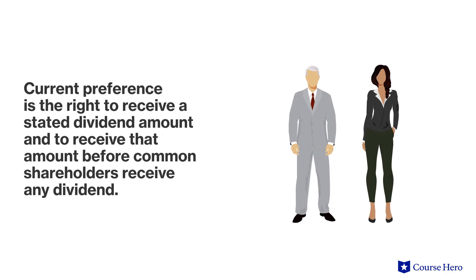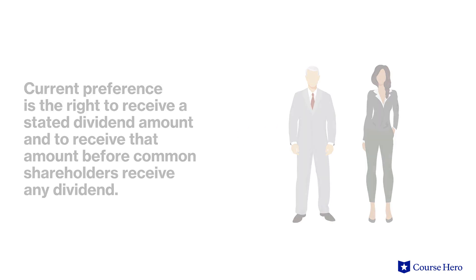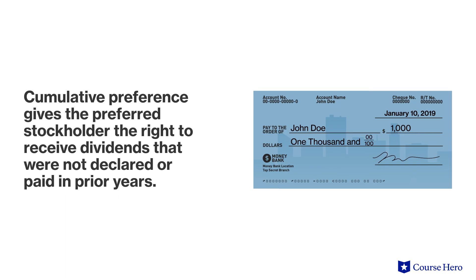The right to dividends accorded to preferred stock can take three forms. First, the current preference: the right to receive a stated dividend amount and to receive that amount before common shareholders receive any dividend. Second, the cumulative preference: this gives the preferred stockholder the right to receive dividends that were not declared or paid in prior years.